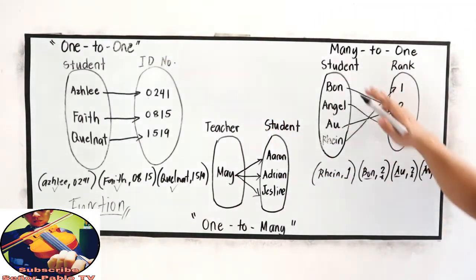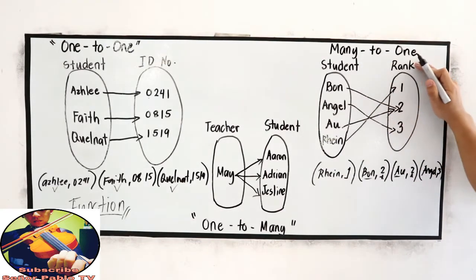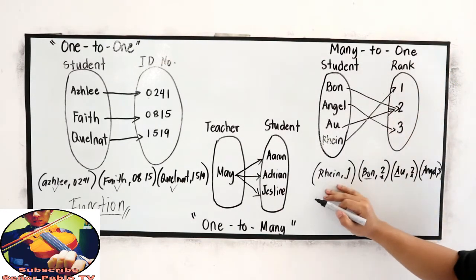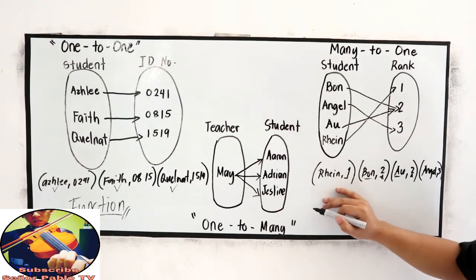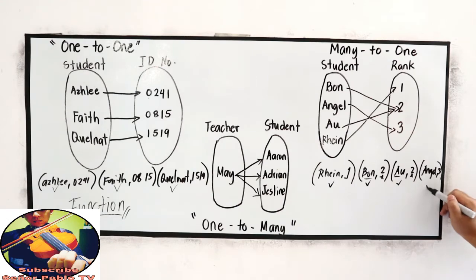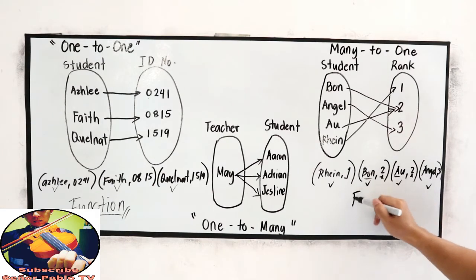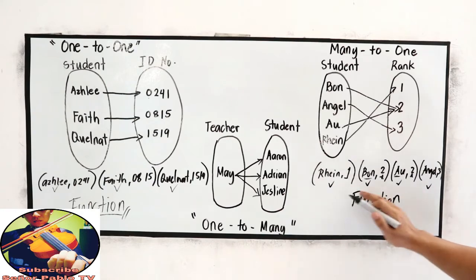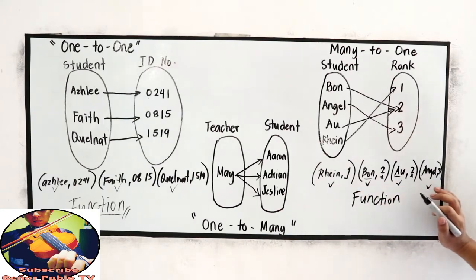How about many-to-one correspondence? Let's check the domain, or the abscissa, rain, bond, au, and angel. Function or not? It is a function. Why? Because no X coordinate is repeated.